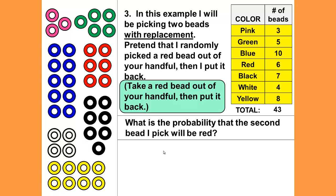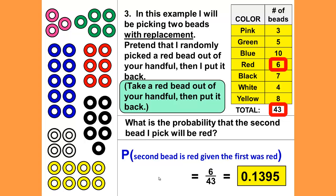What is the probability that the second bead I pick will be red? Notice we're not interested in the two beads together but just that the second bead will be red. We're looking at our sample space and ready to pick a second bead. What is the chance? 6 out of 43, which is 0.1395.